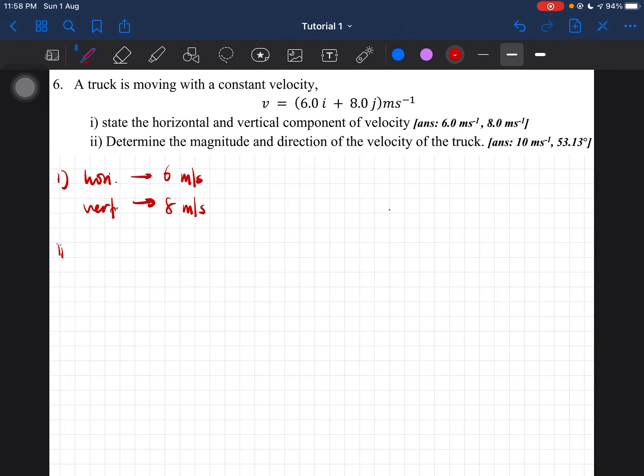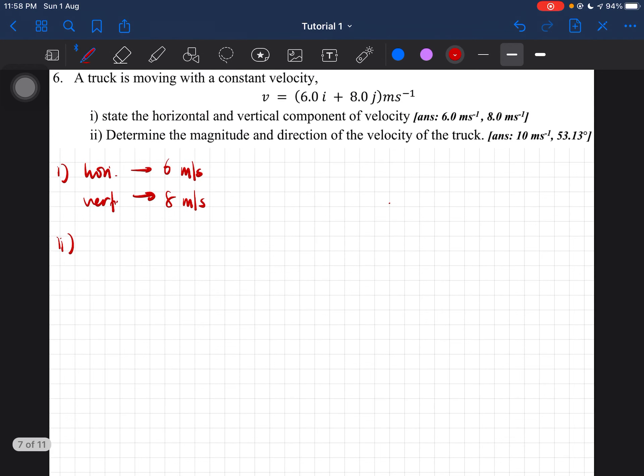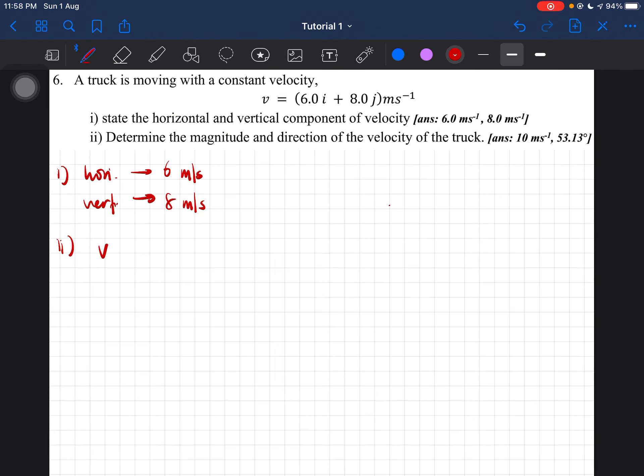Next, we have to determine the magnitude and direction of the velocity. The magnitude can be calculated using this formula: square root of Vx squared plus Vy squared.